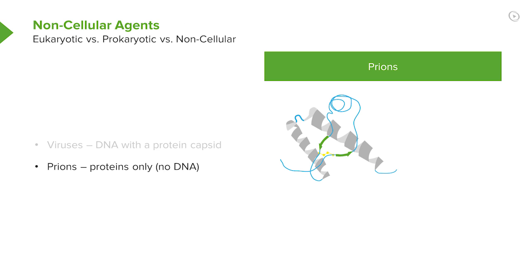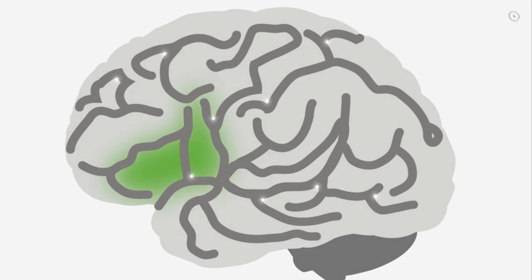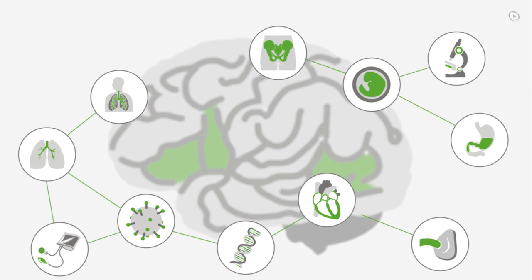Finally, prions have given us some questions to think about because they contain no DNA. However, their contacting other proteins can cause them to fold in a different way, and they seem to have some sorts of genetic capacities, yet zero DNA. You just completed your first video of the world's best medical exam preparation.